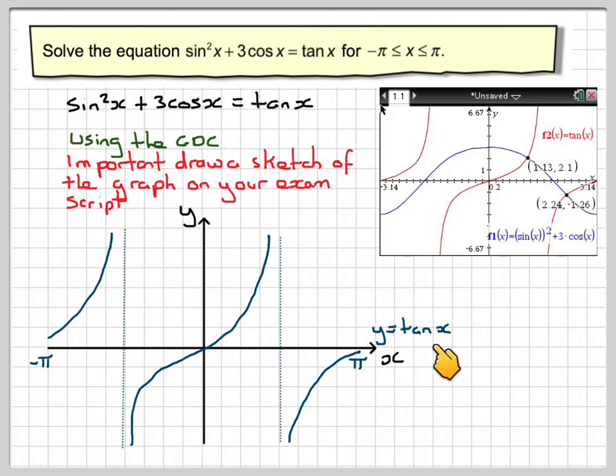After doing that, make sure you label it. And then it makes it easy to draw the other one. So it just needs to roughly look right and make sure that you label each graph. We want the points of intersection. So they should be marked down like that, which is 1.13 and 2.24. We only need the x coordinates from the calculator.